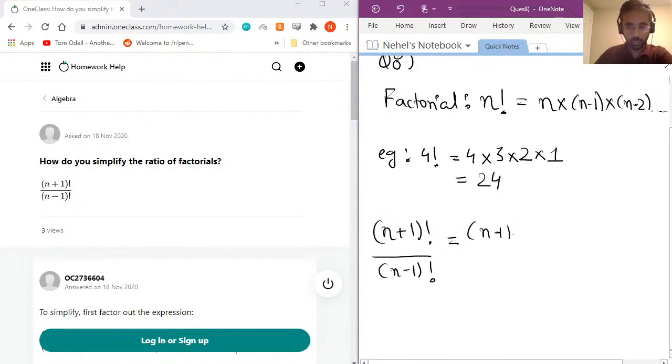(n+1) times n times (n-1) times (n-2), all the way to 1. And on the denominator, let's not simplify it, let's just keep it as (n-1)!.